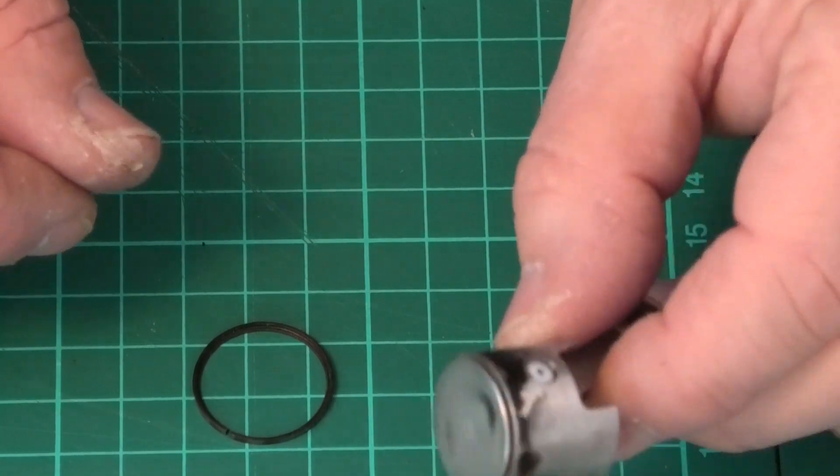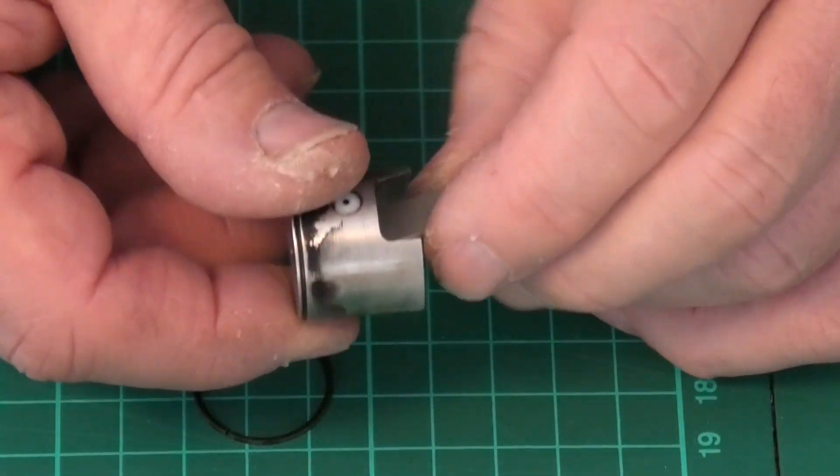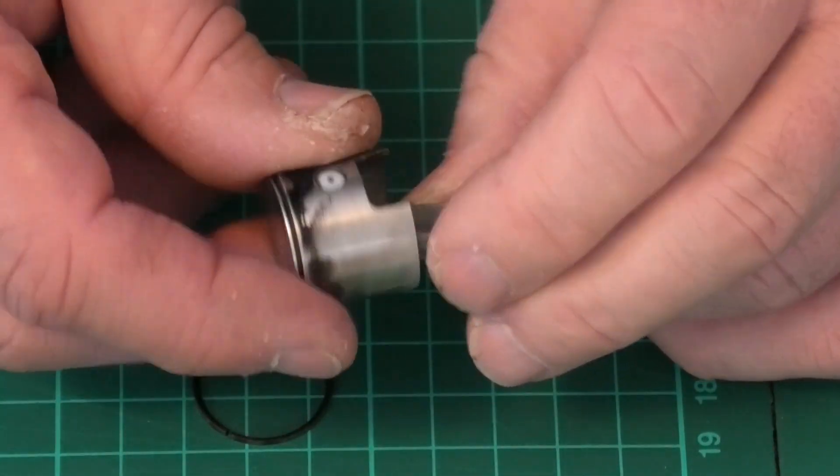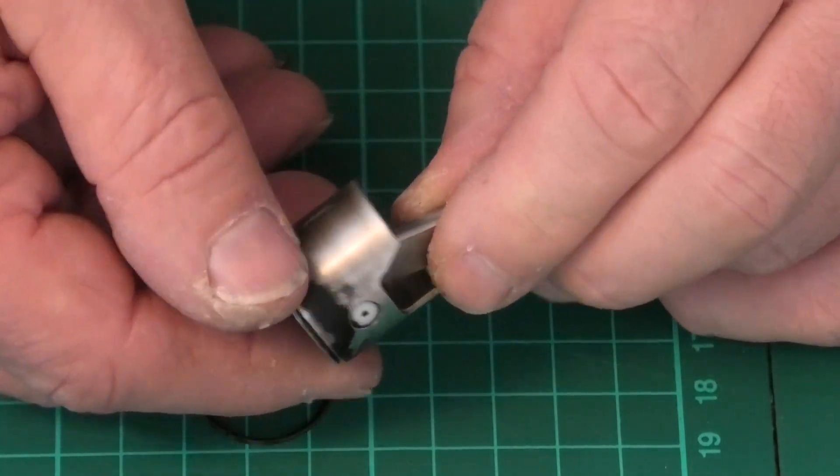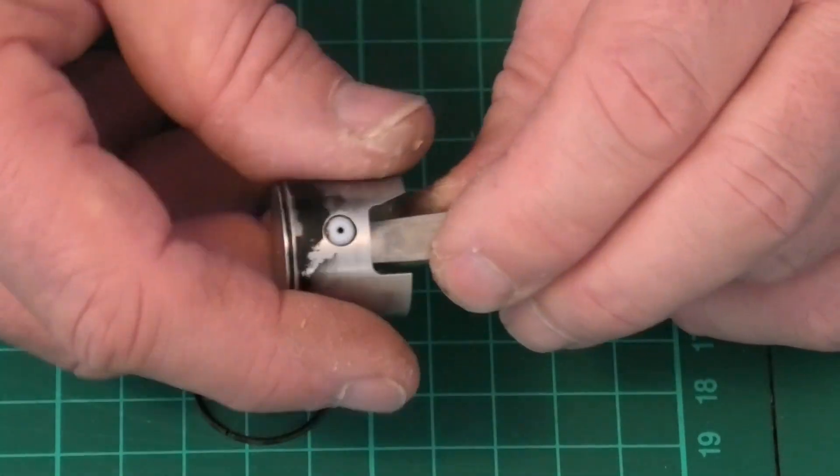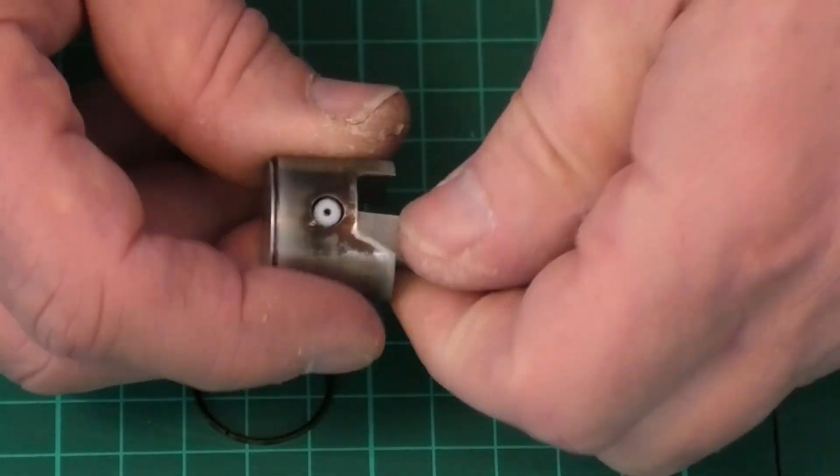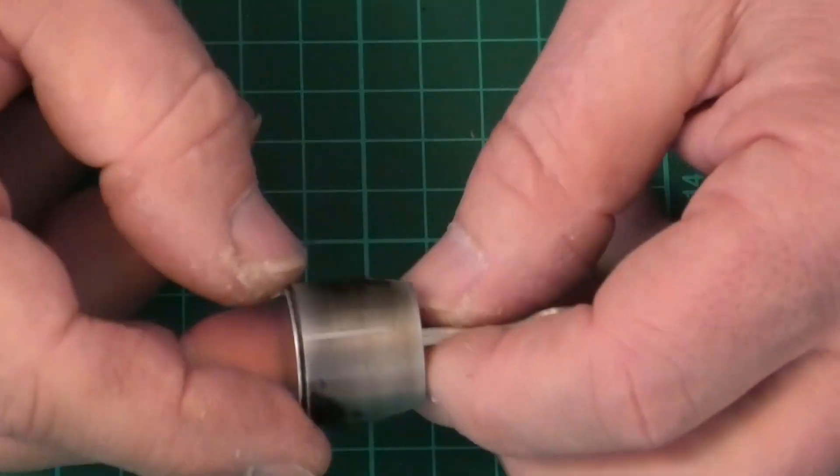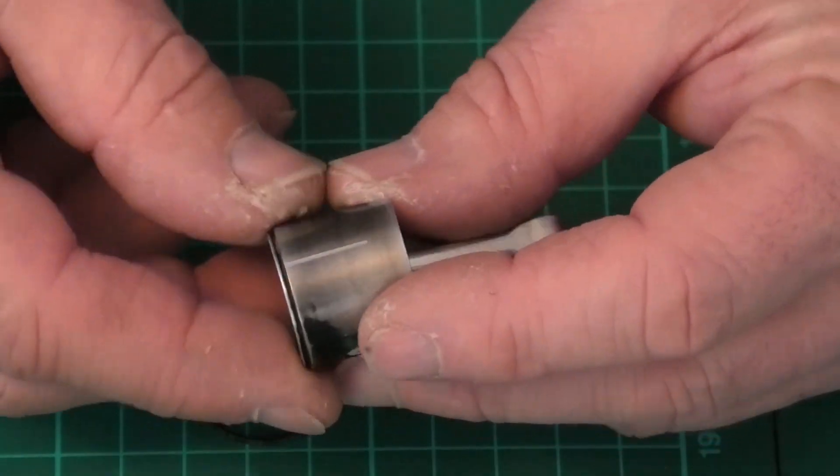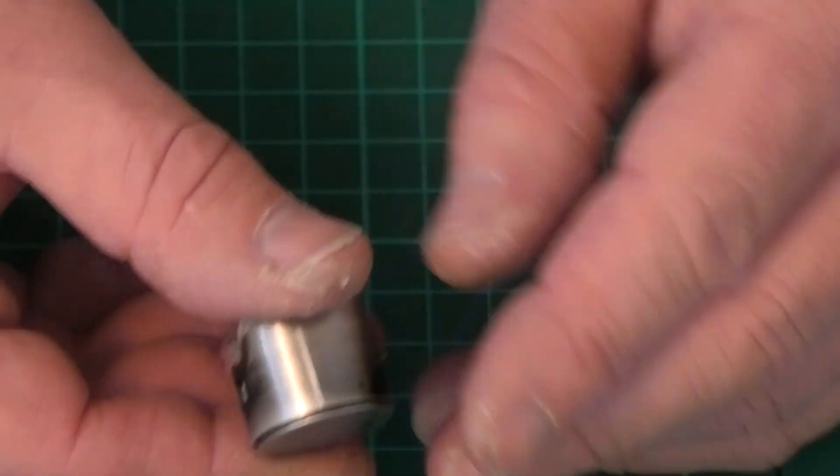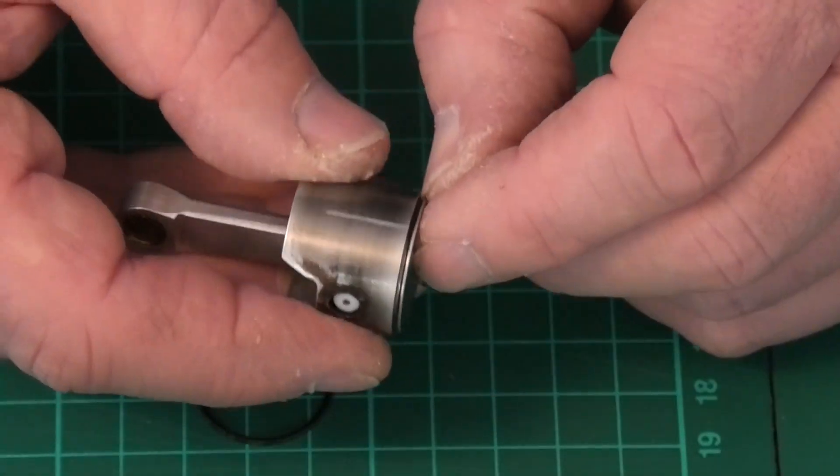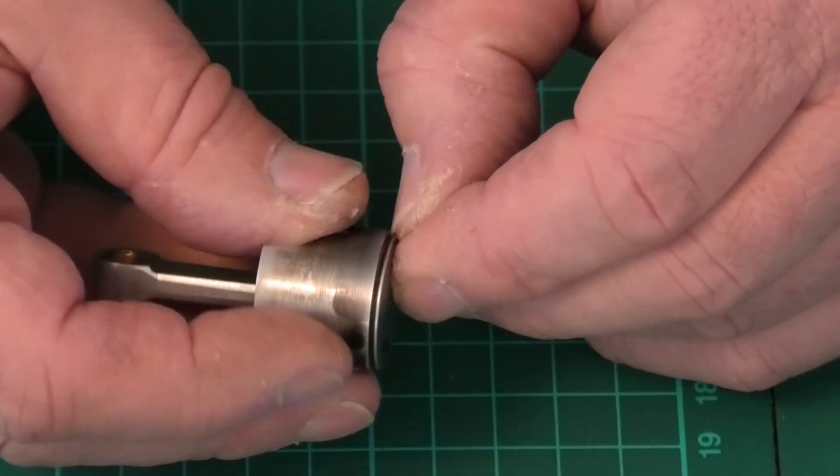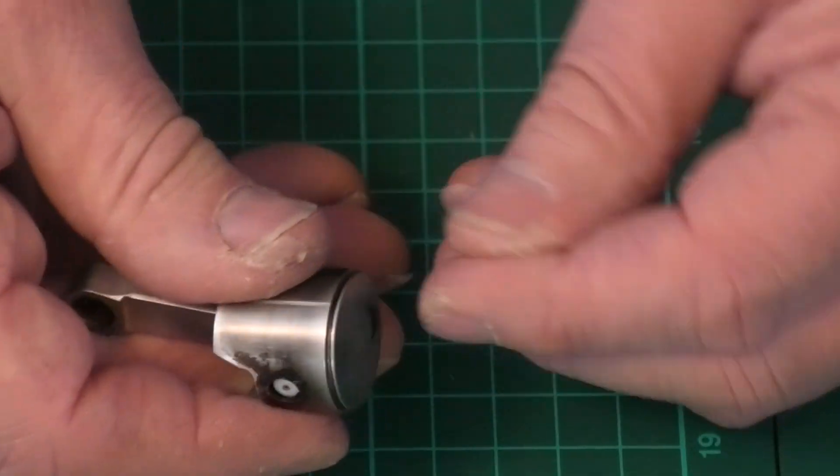I've now cleaned up the piston. I haven't got all of the carbon off - I didn't want to use anything too abrasive and that was very stubborn so I've decided to leave that, but it's smooth and clean so that'll be fine. The groove I've made sure there's no dirt or carbon in that.